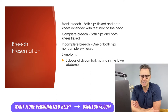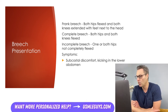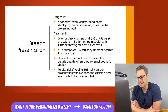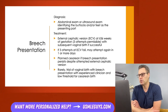There are three types of breech presentation. Frank breech is when both hips are flexed and both knees are extended with the feet next to the head. Complete breech is when both hips and both knees are flexed. Incomplete breech is when one or both hips are not completely flexed. Symptoms include subcostal discomfort from the fetal head pressing against the fundus, and kicking felt in the lower abdomen in complete or incomplete breech. Diagnosis is made by palpating the presenting part on abdominal exam, with ultrasound to confirm if uncertain.